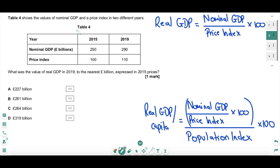Now to the next question — all it requires is one equation, but for some reason nobody ever seems to know what it is. Another question that starts with utter waffle, but our eyes can see what the table is showing us. The actual question is: what was the value of real GDP in 2019 to the nearest billion pounds? We need an equation for that. Here it is: to calculate real GDP, you take nominal GDP, divide by the price index in that year, and multiply by 100. To get real GDP per capita, same equation, just divide by the population — so simple.